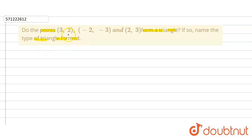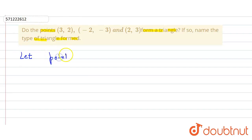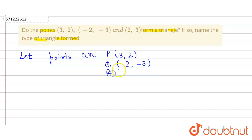We have to find out whether these three points form a triangle, and if they do, we also have to tell the type of that triangle. So first we label the points: P is (3, 2), Q is (-2, -3), and R is (2, 3). We will find the distances PQ, QR, and PR, then find a relationship between all these distances.